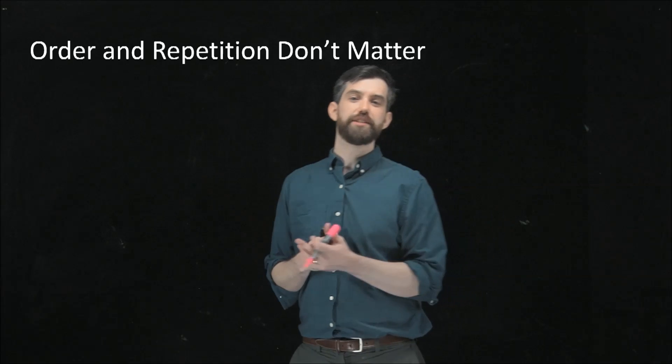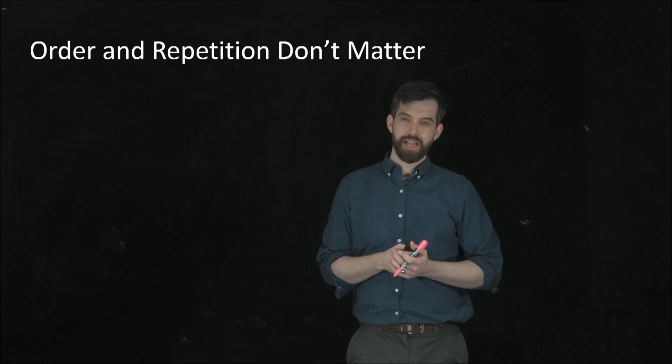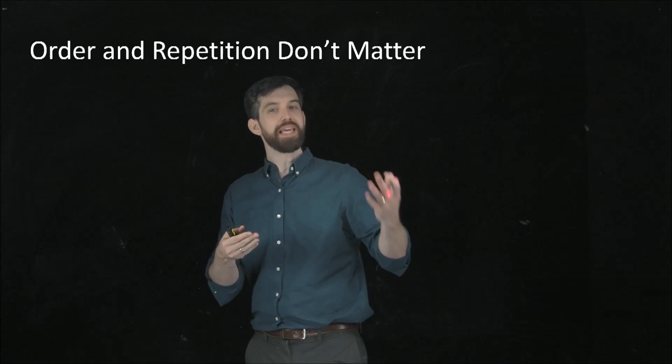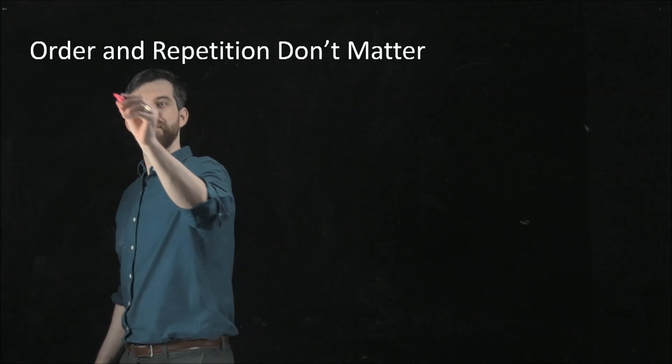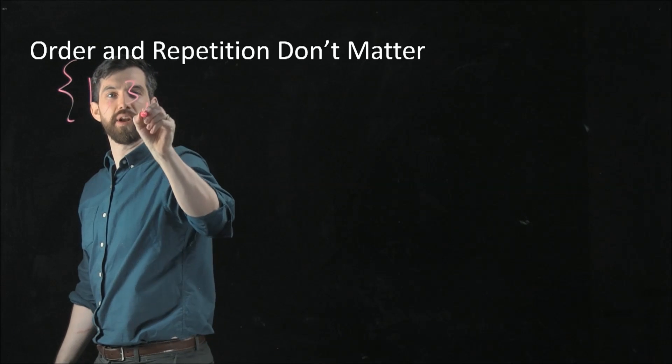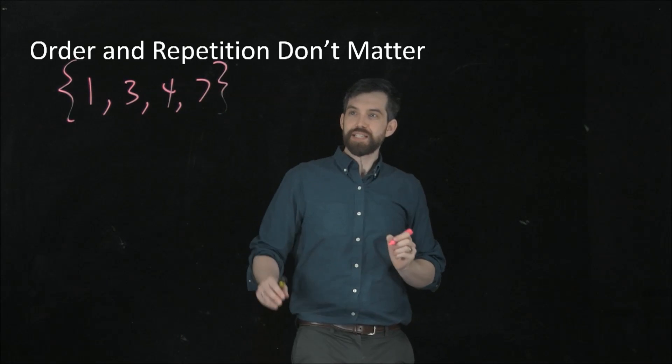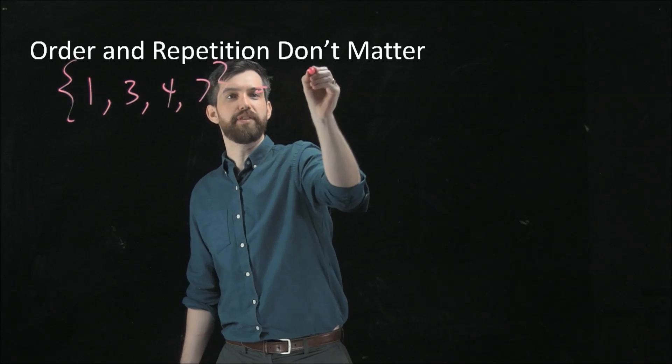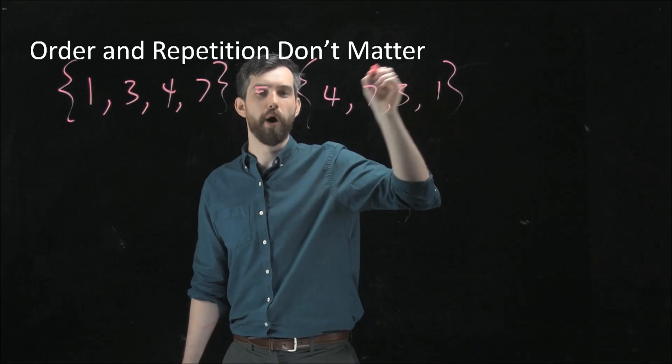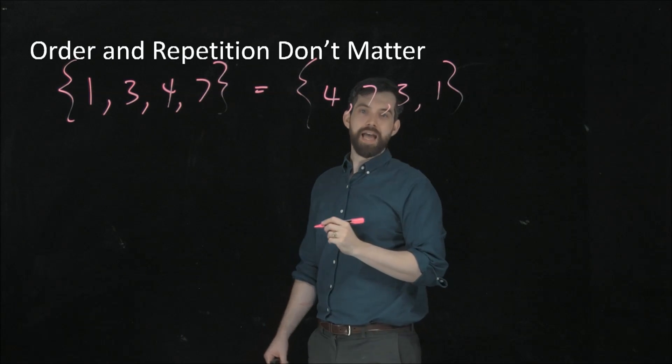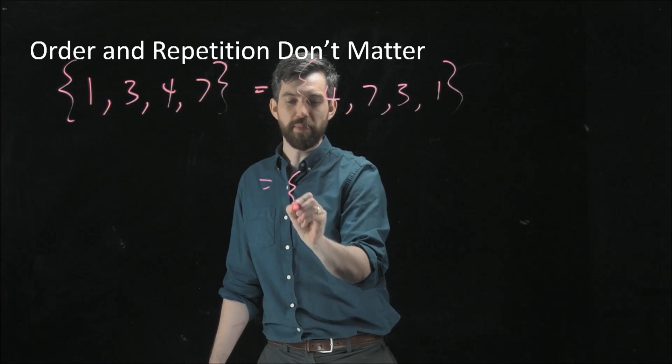One of the interesting features about a set is that the order of the elements in the set, how I list them, and also whether or not I repeat elements over and over again does not matter. So, for instance, if I'm going to look at the set {1, 3, 4, 7}, this is a set we've seen before. This set is exactly the same thing as the set where I just sort of scrambled them: {4, 7, 3, 1}.